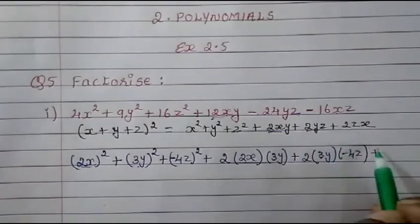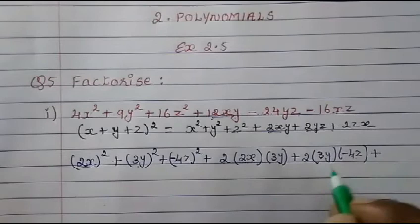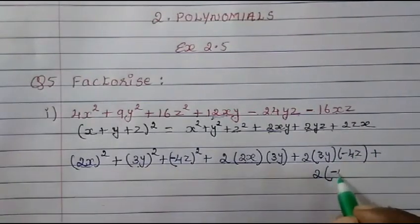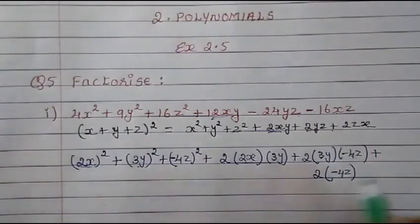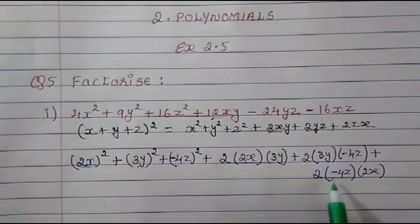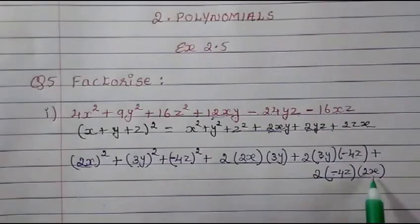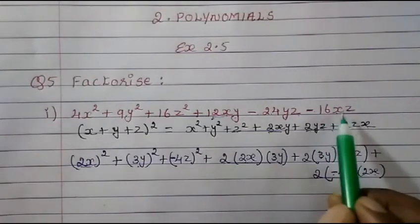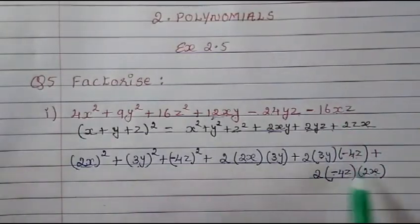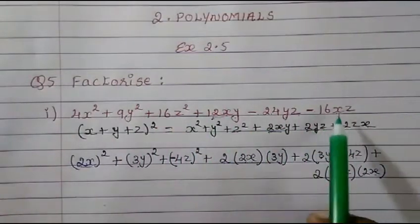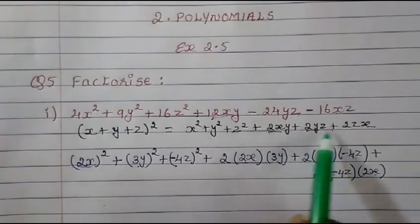Now the 2zx part. We write 2 as it is; z value is (−4z) and x value is 2x. So 2 times (−4z) times 2x: 2 fours are 8, 8 twos are 16, and negative is there, so we get −16xz. So now exactly this sum has been written in the expanded identity form.